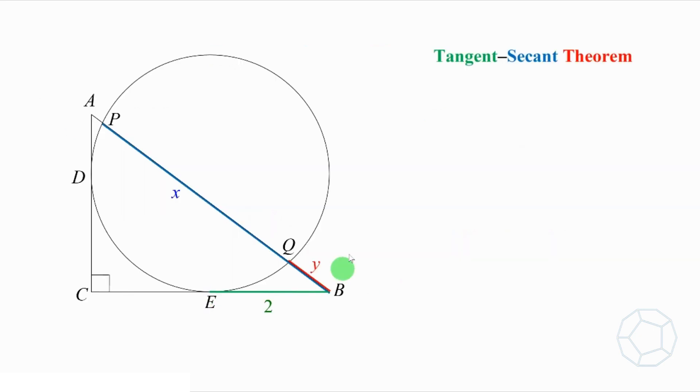Now, we can go back to the original figure. Because BE is a tangent, BQP is a secant. So by tangent secant theorem, we have BQ times BP is equal to BE squared. That is, X times Y is equal to 2 squared, which is 4. Let's call this equation 1.